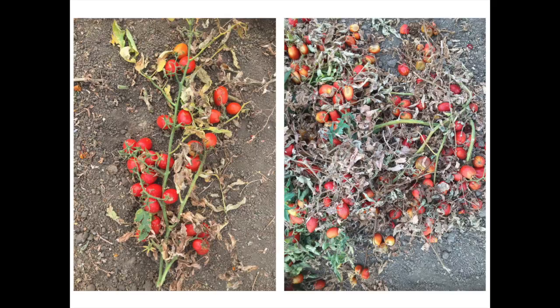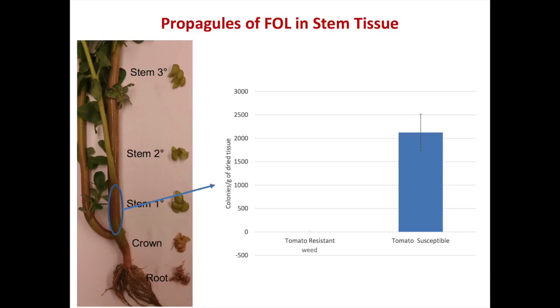Fusarium disease colonizes other crops, so it can sustain itself basically indefinitely on other crops and weeds. So very crucially, if you get fusarium disease, it's very important that you manage it.